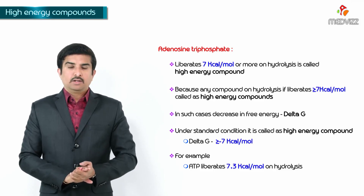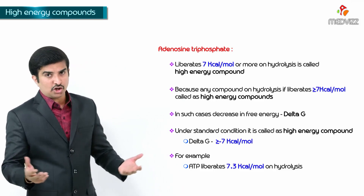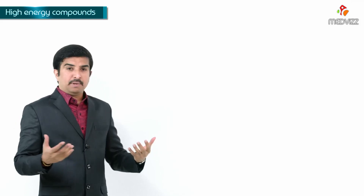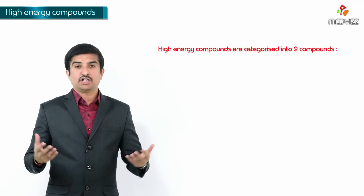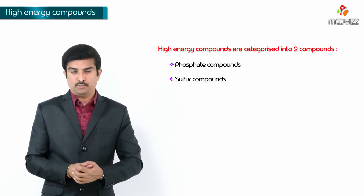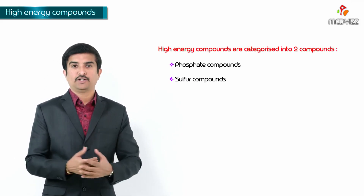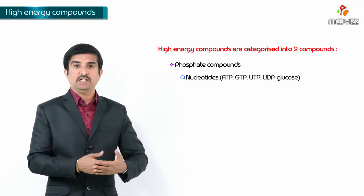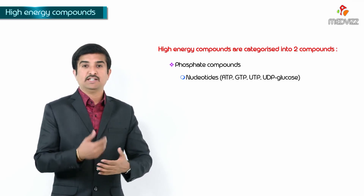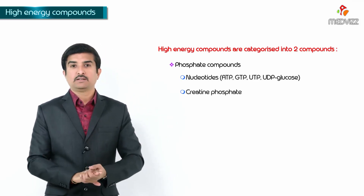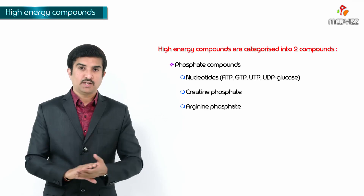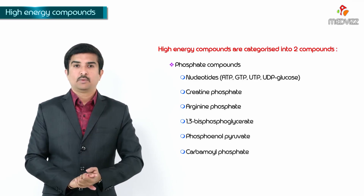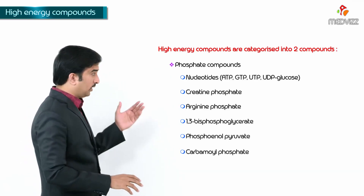There are two categories of high energy compounds in the cell. The first category is phosphate compounds. Examples of phosphate compounds include nucleotides like ATP, GTP, UTP, as well as UDP-glucose, creatine phosphate, arginine phosphate, phosphoenol pyruvate, and carbamoyl phosphate. All these are taken under the phosphate group, and there is a big list in this category.